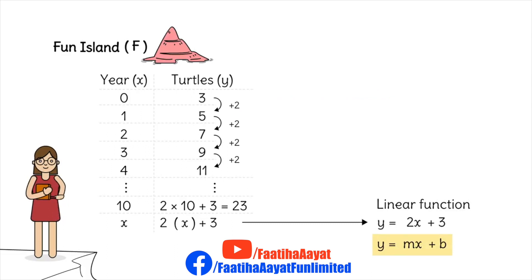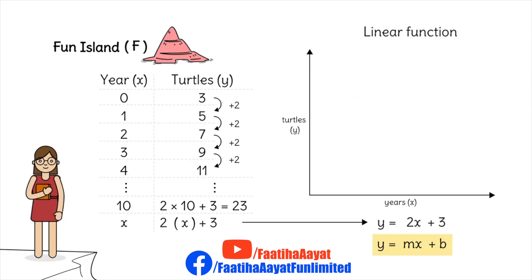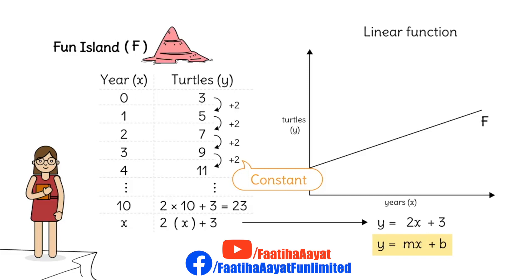This linear function becomes y equals to mx plus b. Now I'm starting to understand what's happening. If we make a graph, the graph will of course be a straight line. Remember, if we do addition or subtraction with a constant, then it will always be a straight line.